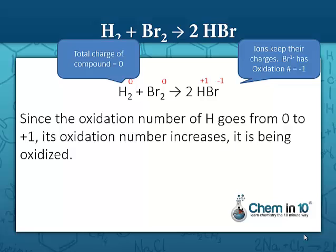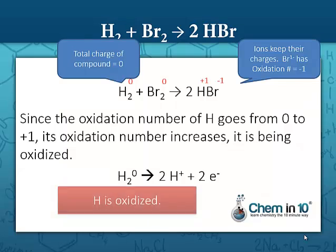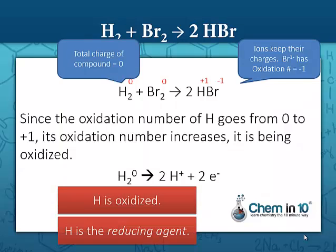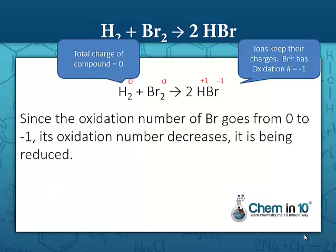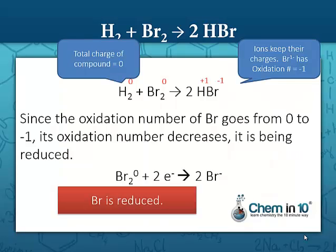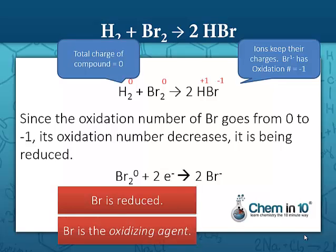Since the oxidation number of hydrogen goes from zero to plus one, its oxidation number increases, so it's being oxidized. Hydrogen being oxidized means it is the reducing agent — H2 is the reducing agent. Looking at bromine, since bromine goes from an oxidation number of zero to negative one, its oxidation number decreases, so it's being reduced. Since bromine is being reduced, it is referred to as the oxidizing agent — Br2 is the oxidizing agent.